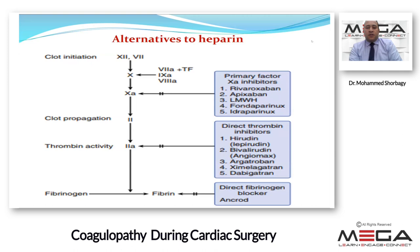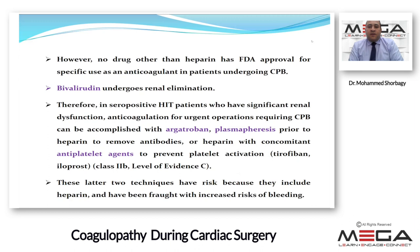Bivalirudin is the most appropriate option, though no drug other than heparin has FDA approval specifically for cardiopulmonary bypass. Since bivalirudin undergoes renal elimination, in HIT patients with significant renal dysfunction, anticoagulation for urgent CPB can be accomplished with argatroban and plasmapheresis prior to heparin to remove antibodies, or heparin with concomitant antiplatelet agents such as tirofiban and iloprost, though these carry increased risk of bleeding.